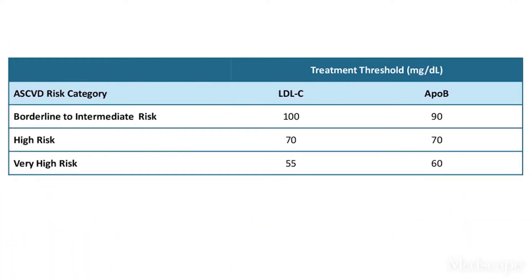After clarifying the importance of ApoB in providing additional discrimination of cardiovascular risk, the consensus statement then clarifies the treatment thresholds — or goals of treatment for ApoB — that correlate with the established LDL cholesterol treatment thresholds. For borderline to intermediate risk, which is primary prevention, the LDL cholesterol goal is 100 or below, and that correlates with an ApoB level of 90. For high-risk patients — those with established disease, multiple risk factors, or diabetes — the LDL cholesterol goal is less than 70, which correlates with an ApoB level of 70. And for very high-risk patients, an LDL cholesterol level less than 55 correlates with an ApoB level of 60.